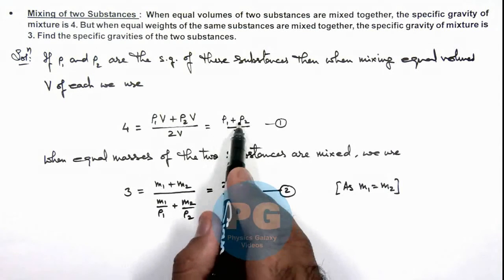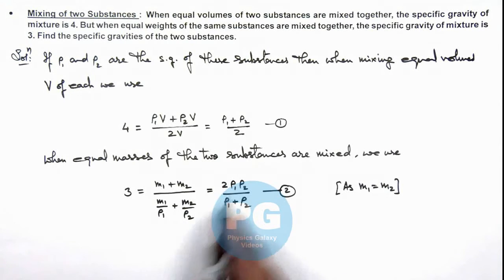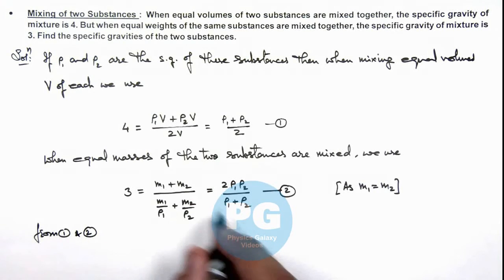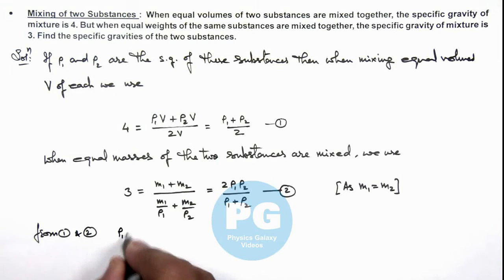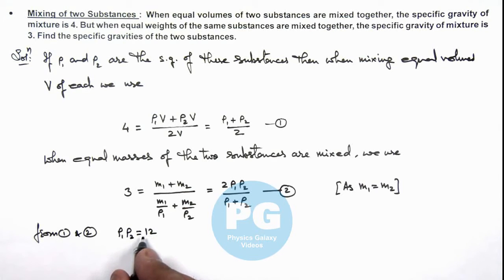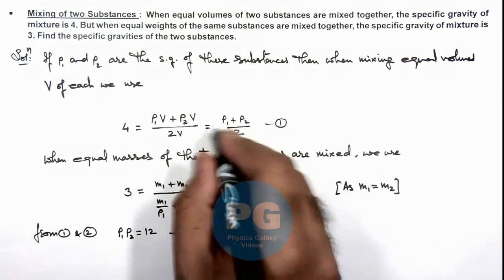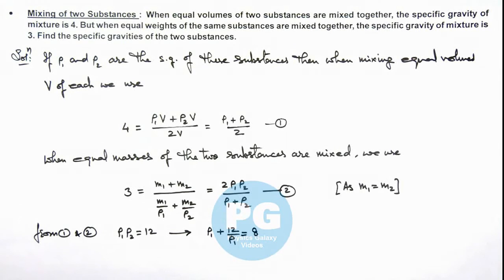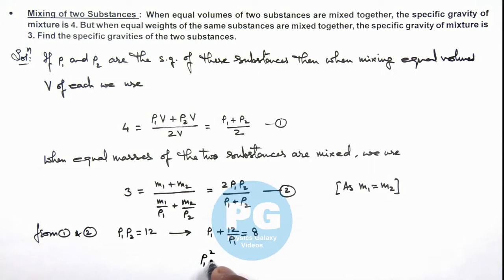If we substitute ρ1 + ρ2 = 8 from Equation 1, then from Equations 1 and 2 we can simplify and get the values of ρ1 and ρ2. We get ρ1 × ρ2 = 12. Substituting into Equation 1 where ρ1 + ρ2 = 8, this gives us ρ1 + 12/ρ1 = 8, which is a quadratic equation. The result is ρ1² - 8ρ1 + 12 = 0.